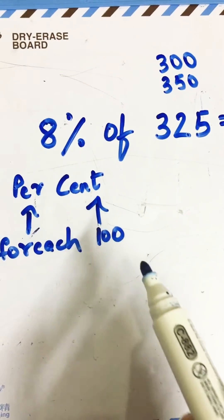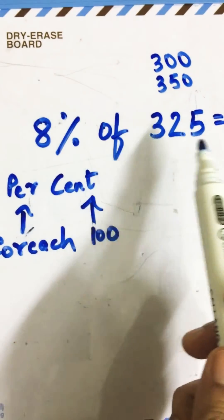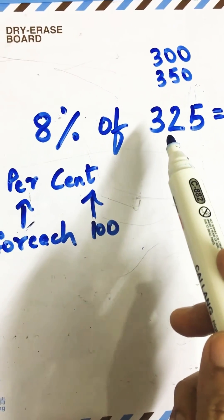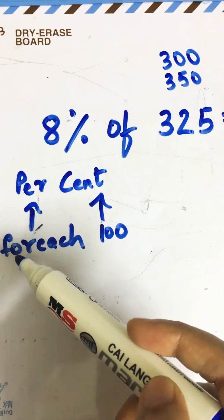Let's calculate quick percentages part three. Now we are going to do 8% of 325. As we have done 300 and 350 before, now we are going to do 325. It's a percent you already know.